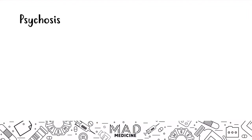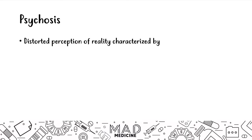Psychosis is a condition where patients have a disordered perception of reality. That is very, very important. They're not intact — the reality perception is not intact, it's distorted. And it's characterized by three main things. These characterizations are pretty high yield because they're going to set the groundwork for other conditions like schizophrenia or delirium. So there are three main hallmark conditions you need to know that happen in psychosis.